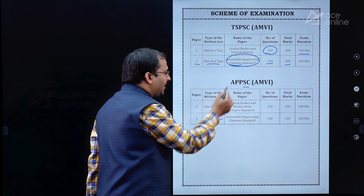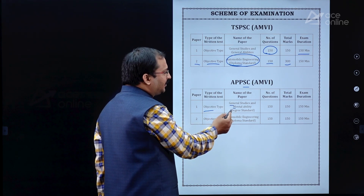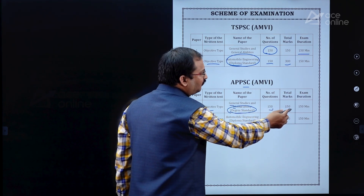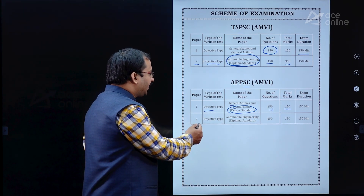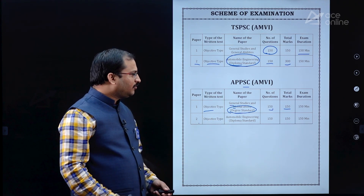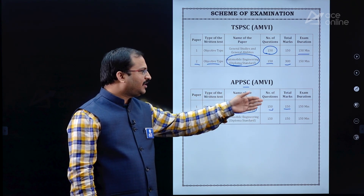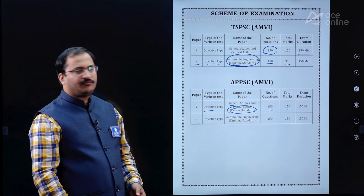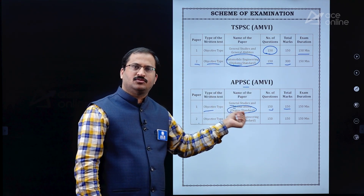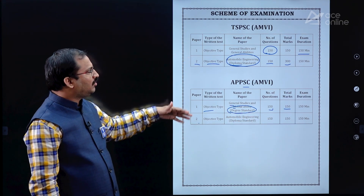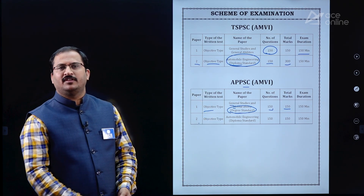APPSC AMVI also has two papers. Paper 1 is General Studies and Mental Ability at degree standard — 150 questions, 150 marks, 150 minutes. Paper 2 is Automobile Engineering, objective type — 150 questions, 150 marks, 150 minutes. In TSPSC each question carries two marks, whereas in APPSC each question carries only one mark. This book will be helpful for Paper 2 of both TSPSC and APPSC.